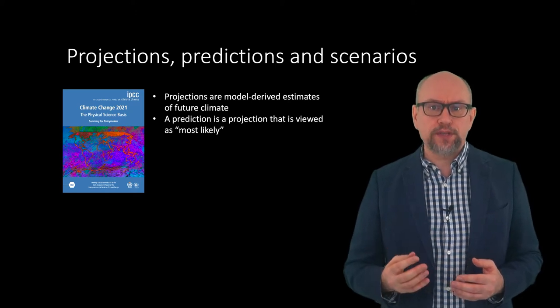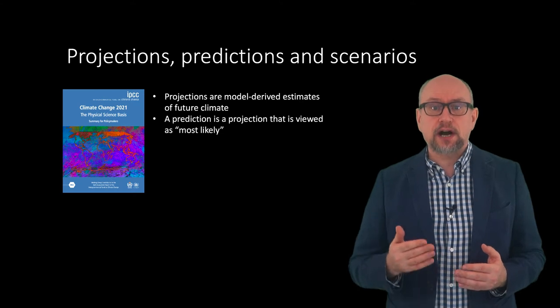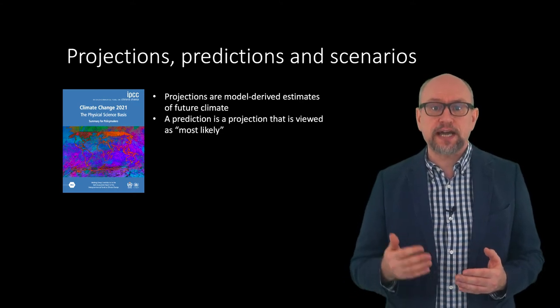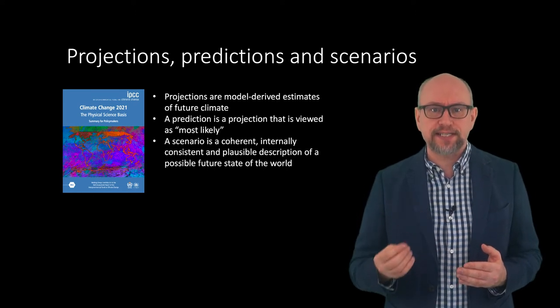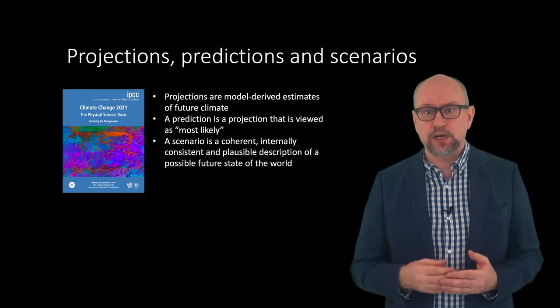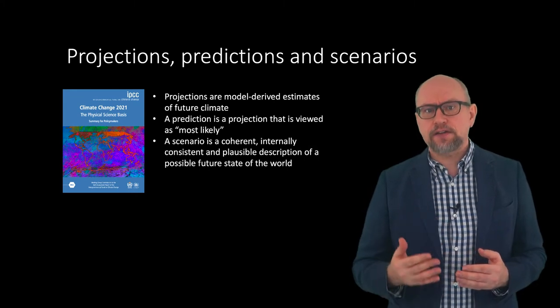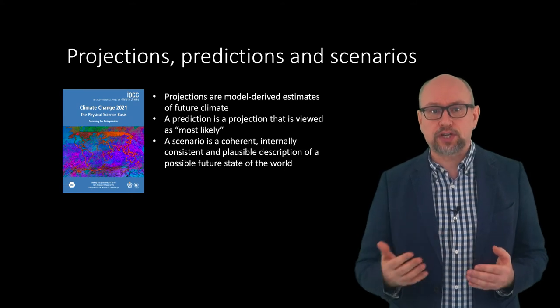The reason for this difference is that many of the climate simulations calculated are for future scenarios that are seen as possible. A scenario is a coherent, internally consistent and plausible description of a possible future state of the world. Scenarios have a demographic, socio-political, economic and technological storyline.